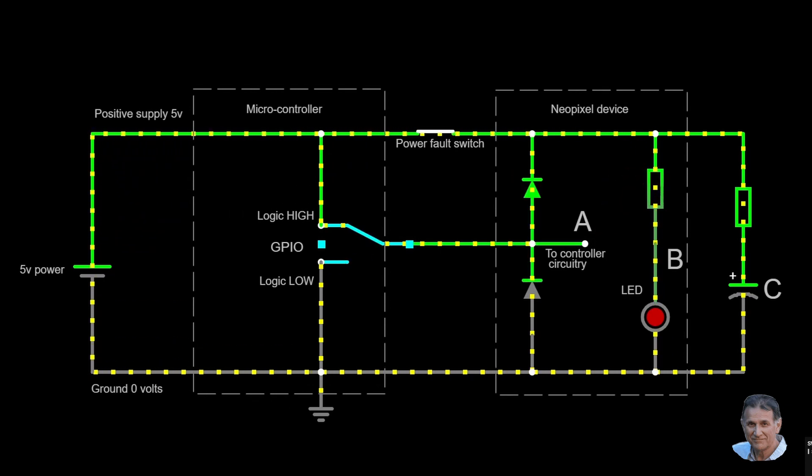To keep things simple, I've represented the NeoPixel internal circuitry with a resistor and an LED, which I've called B. And you can see that current is always present. The capacitor C represents the circuit capacitance, which may be due to wiring or may be due to a physical capacitor.